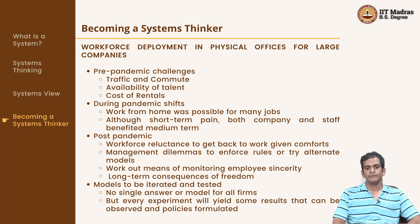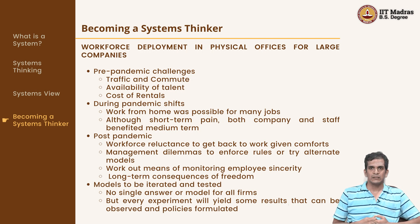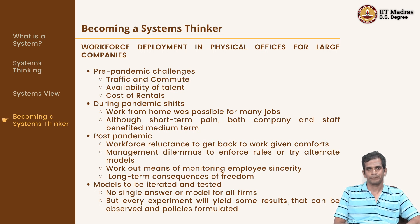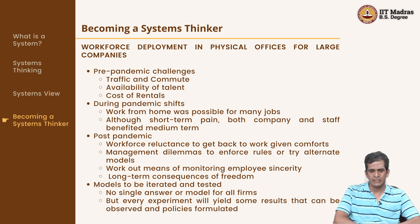From an employee perspective, traffic and commute were a challenge going to and fro. From a company perspective, they were facing challenges of where to exactly build offices — they couldn't be built within the city for obvious reasons of lack of availability and high cost. The third thing the company had to keep in mind was where the talent was available. They needed to find where the right talent is available so that cost factors and talent pool availability are balanced. These challenges existed earlier.